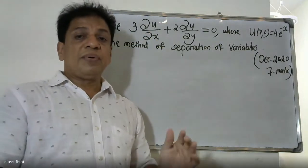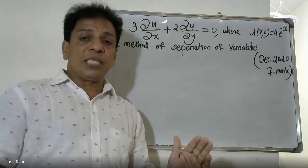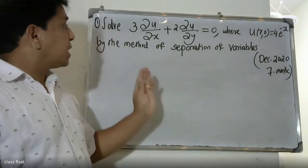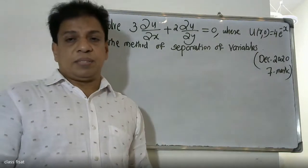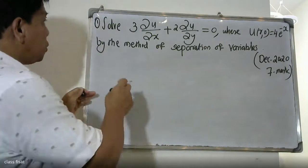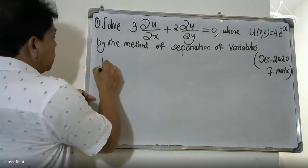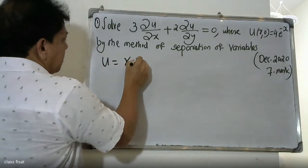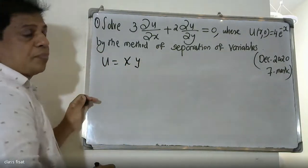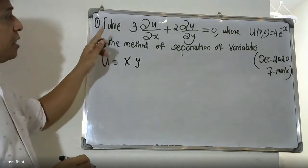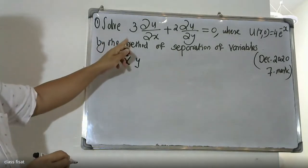Now, u is the dependent variable, x and y are independent variables. We assume the solution u is equal to X(x)·Y(y). That is the method of separation of variables — the method for partial differential equations.